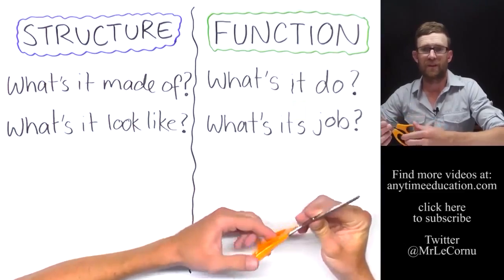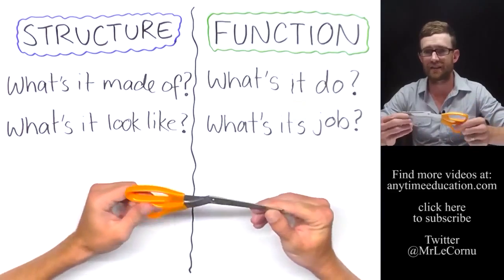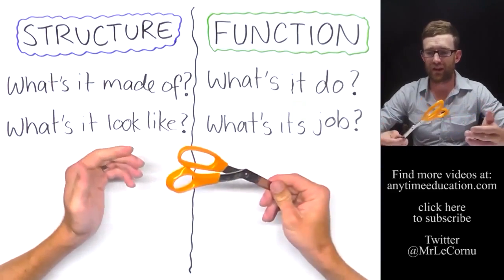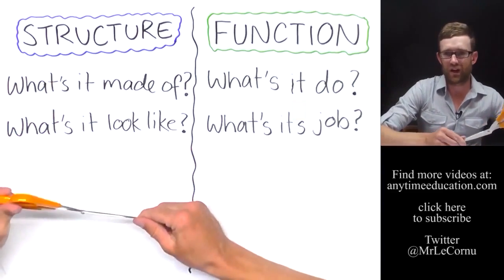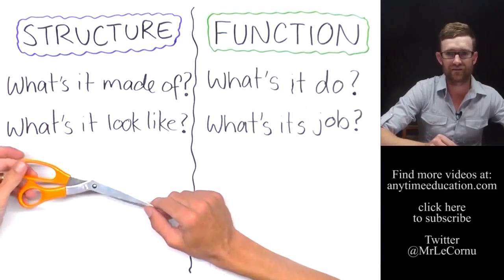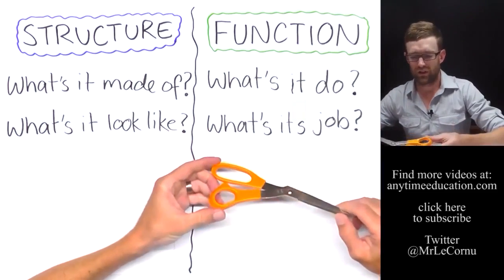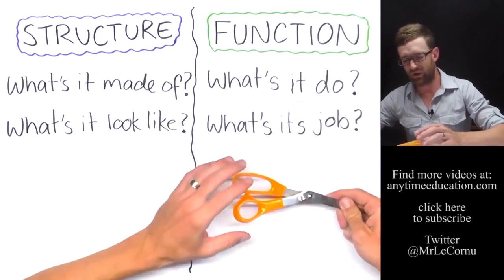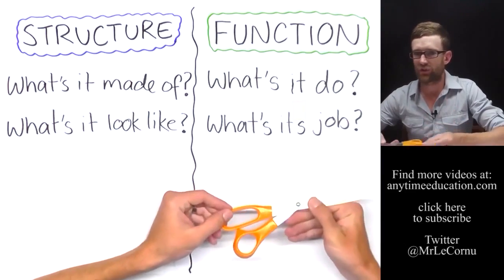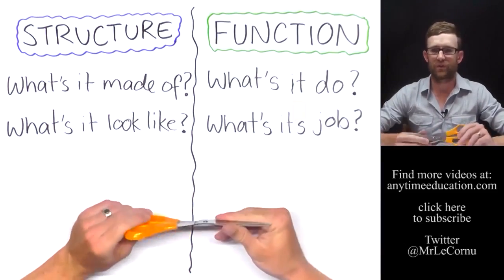But what you can see when I've given you the answers to structure and function for the scissors is they're very different answers. I'd look quite silly if you asked me what's the structure of these scissors and I said well they're used for cutting things. I'm obviously giving you the wrong answer. Vice versa, if you ask me the function of the scissors and I say well they've got two plastic handles and metal blades, that's not describing the function. So we need to get those sorted. We need to understand the difference between the two.